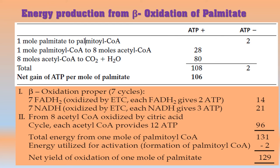After subtracting the initial 2 moles of ATP used in activation, the net gain is 106 ATPs per mole of palmitate. To clarify: using the older values (2 and 3 ATPs from FADH2 and NADH) gives 129 net ATPs; using the more current values (1.5 and 2.5 ATPs) gives 106 net ATPs. Do not confuse these two figures — the difference depends on which ATP yield values for FADH2 and NADH are used.